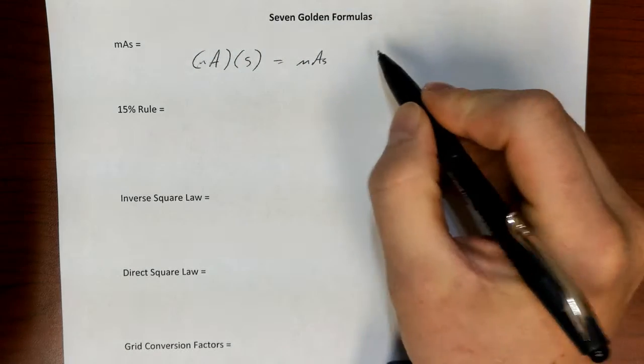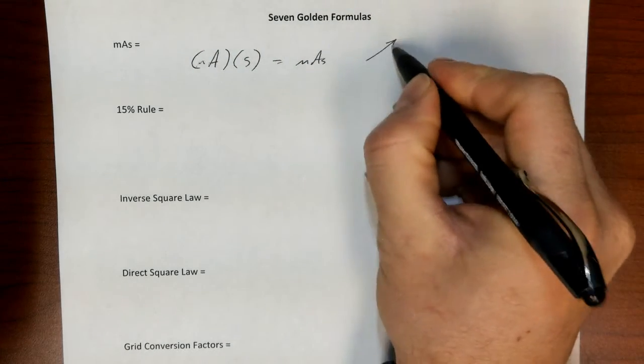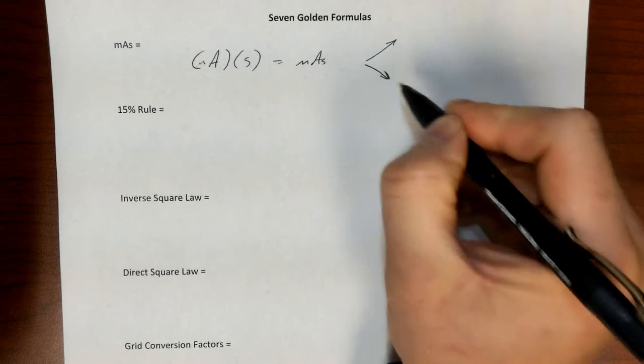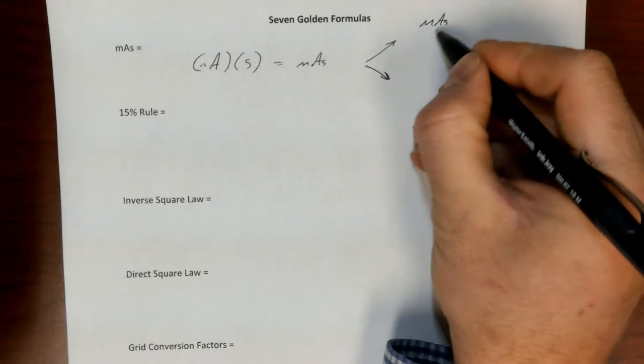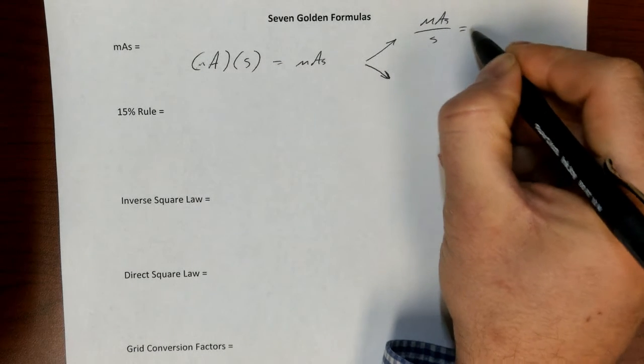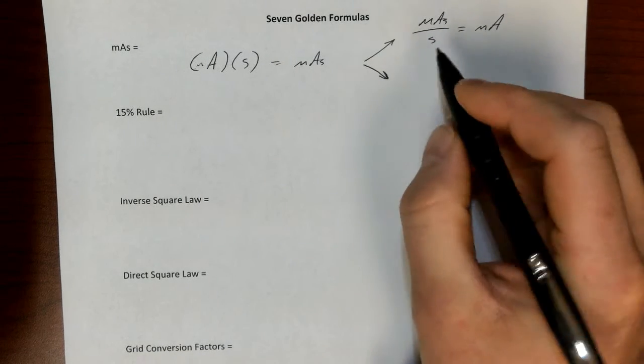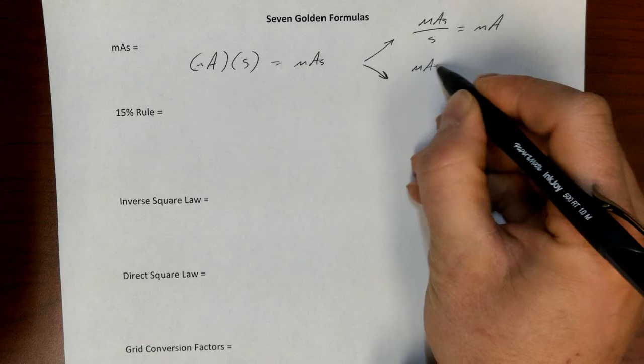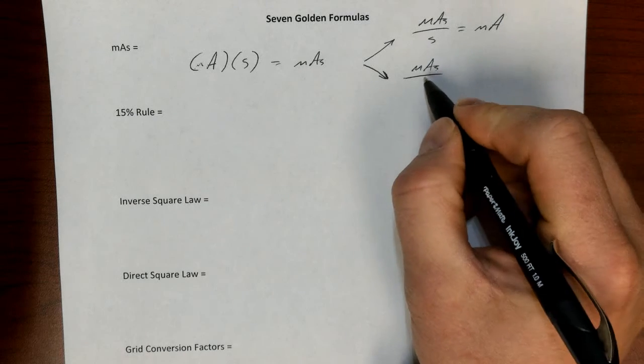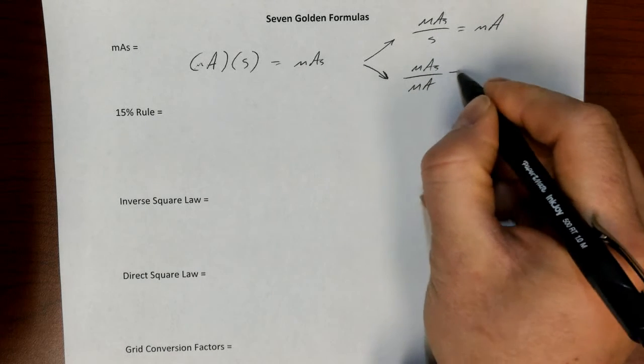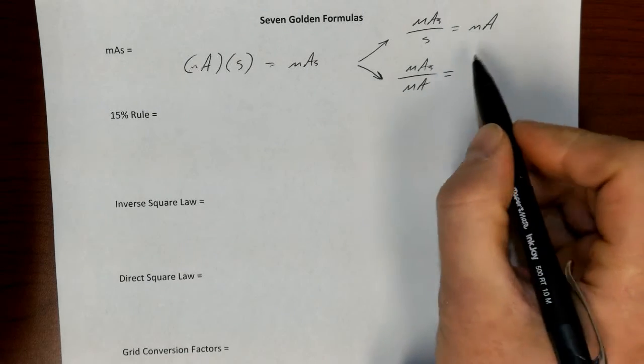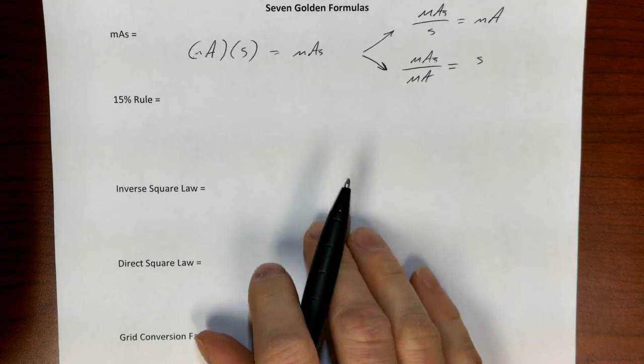Now just with some basic algebra, we can also see that there are two other ways we can consider this information here. So the first is if I'm given mAs and time in seconds, I can solve for mA, and we will use this in all these different ways. Also, if I'm given mAs and mA, I can solve for time in seconds. So all of these are going to be useful ways to employ this first formula.